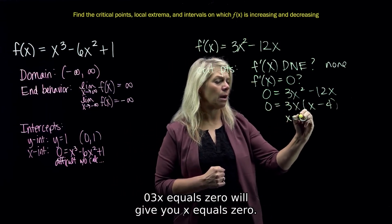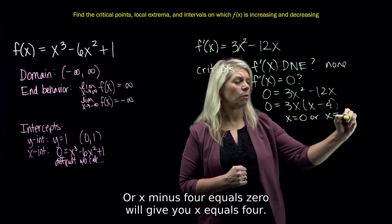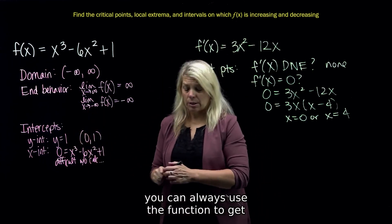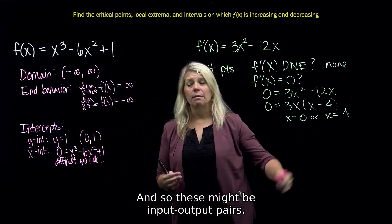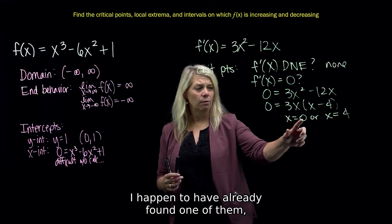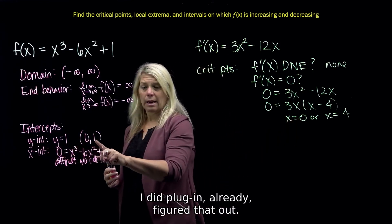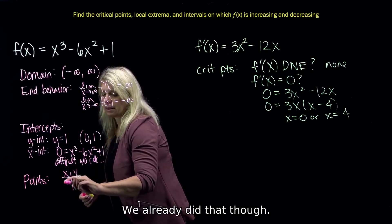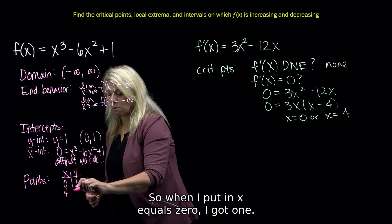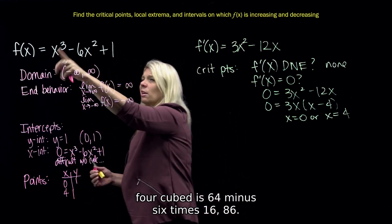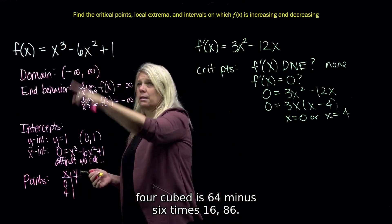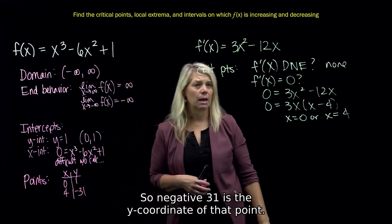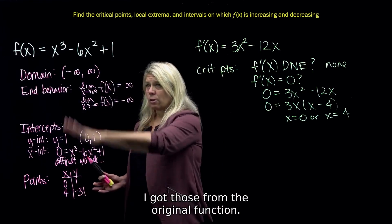Setting the derivative equal to zero, it factors nicely: you can factor out 3x, giving 3x(x − 4) = 0. Setting each factor equal to zero: 3x = 0 gives x = 0, and x − 4 = 0 gives x = 4. Those are the X-coordinates of the critical points. Plugging into the original function: x = 0 gives y = 1, and x = 4 gives 64 − 96 + 1 = −31.